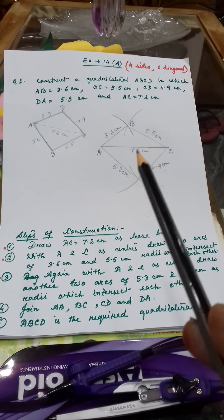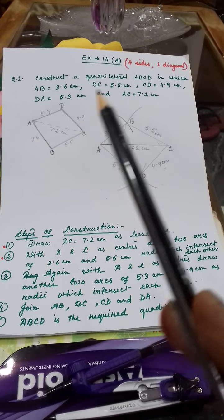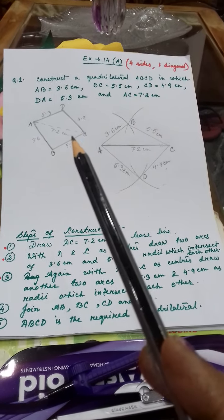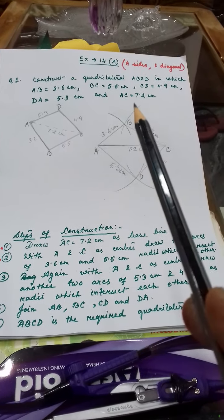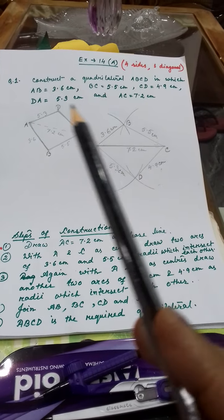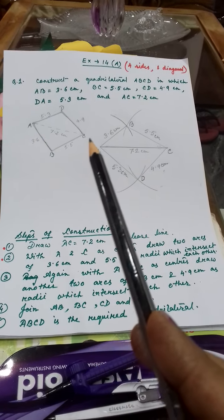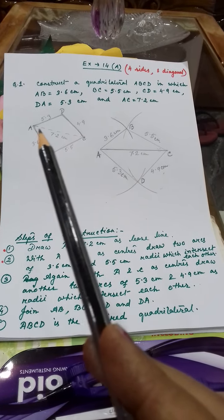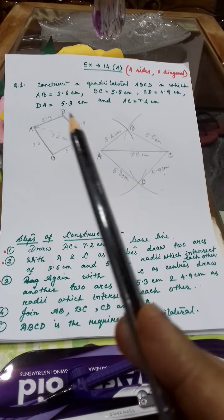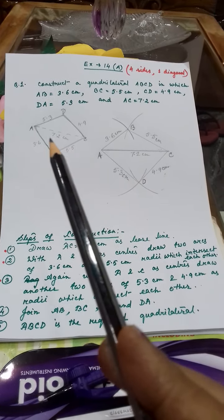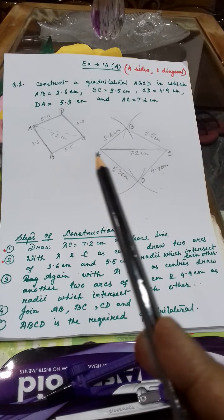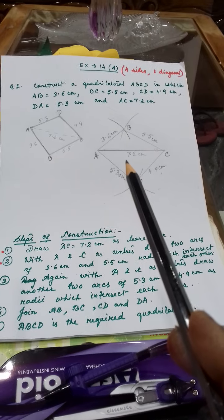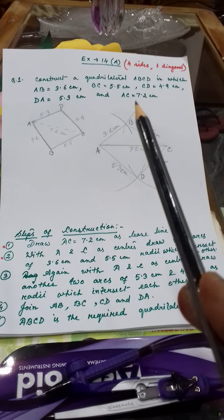There is no hard and fast rule that you must consider 7.2 cm — you can consider another baseline also. But one thing to remember: since there is one diagonal here, and a diagonal always joins the opposite vertices, it means the diagonal must be inside the four line segments.